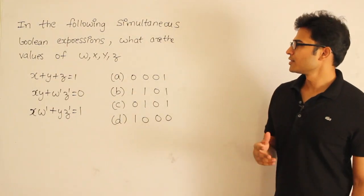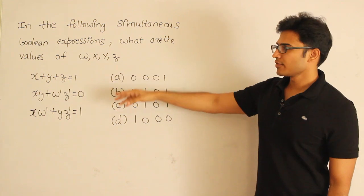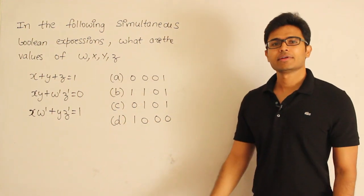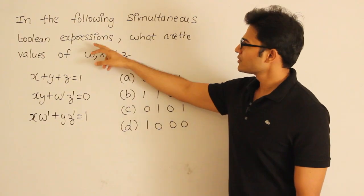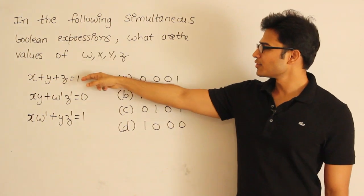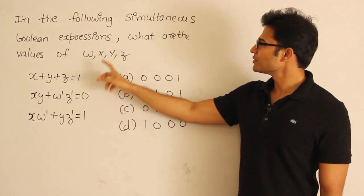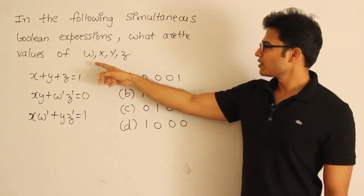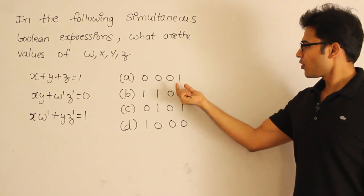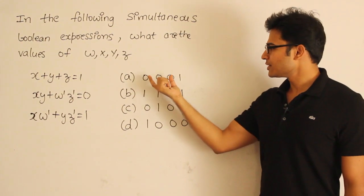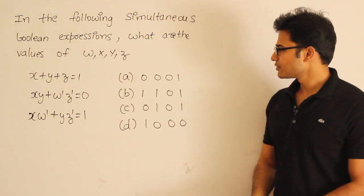One of the possible questions is they will give you some expressions — actually they are equations, specifically simultaneous Boolean equations. We should call them equations, not expressions. The question is: what are the values of w, x, y, z? To solve it is very simple — just take each one and substitute the value there.